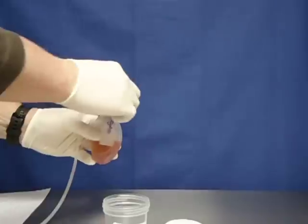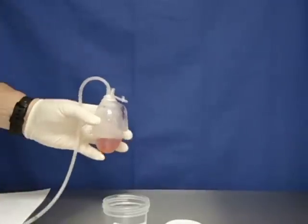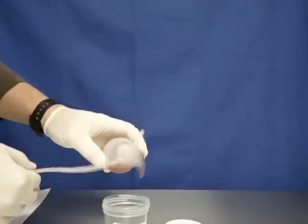Holding the bulb upright, we uncap the port. Turning the bulb over, we empty it into the container.